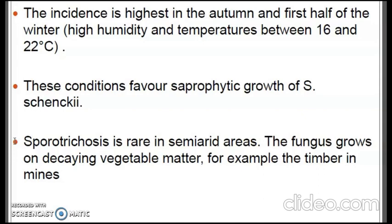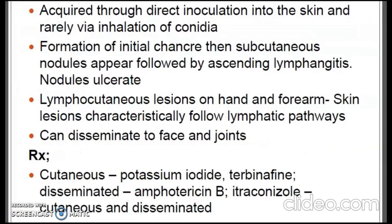The incidence of the disease is highest in autumn and the first half of winter, conditions that favor saprophytic growth of Sporothrix schenckii. The fungus grows on decaying vegetable matter, for example timber in mines. It is acquired through direct inoculation into skin and sometimes through inhalation of conidia. There is formation of an initial chancre, then subcutaneous nodules appear, followed by ascending lymphangitis. The nodules ulcerate and lymphocutaneous lesions on the hand and forearm are formed, with skin lesions characteristically following lymphatic pathways.